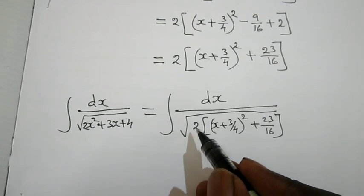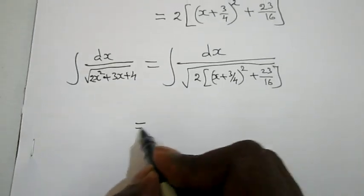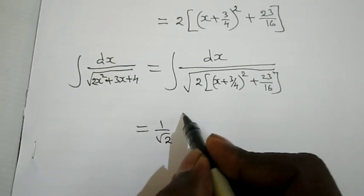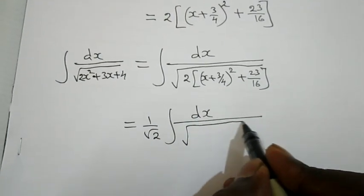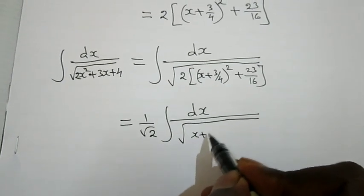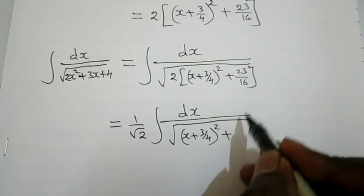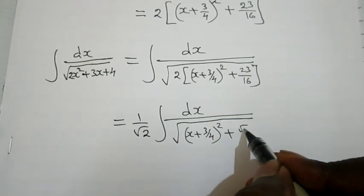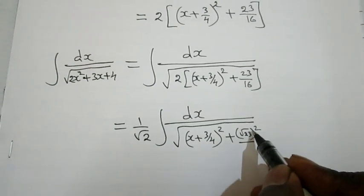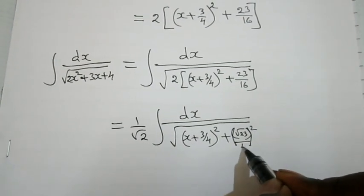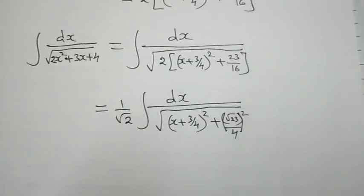Taking the 2 outside the root gives root 2, so we can take root 2 outside. This becomes 1 by root 2 times the integral dx by root of x plus 3 by 4, the whole square, plus root 23 by 4, the whole square.